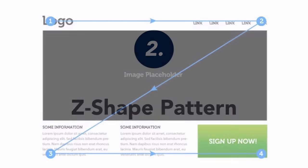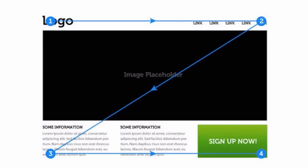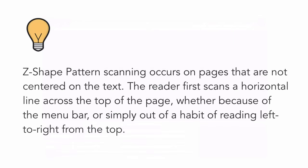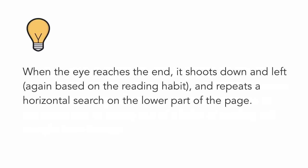The Z-shape pattern scanning occurs on pages that are not centered on text. The reader first scans a horizontal line across the top of the page, whether because of the menu bar or simply out of a habit of reading left to right from the top. When the eye reaches the end, it shoots down and to the left again.